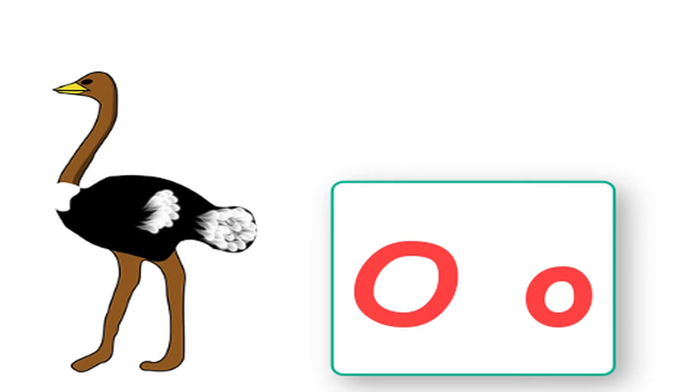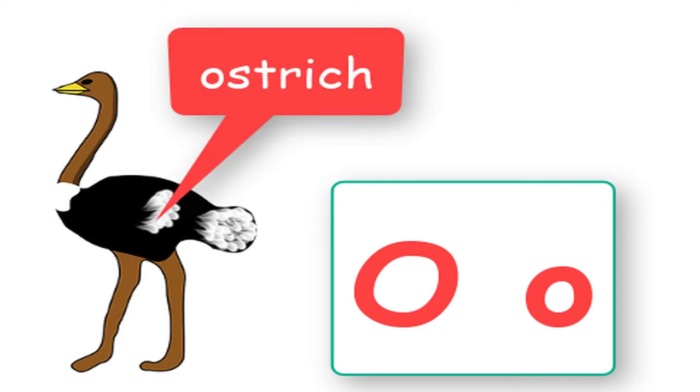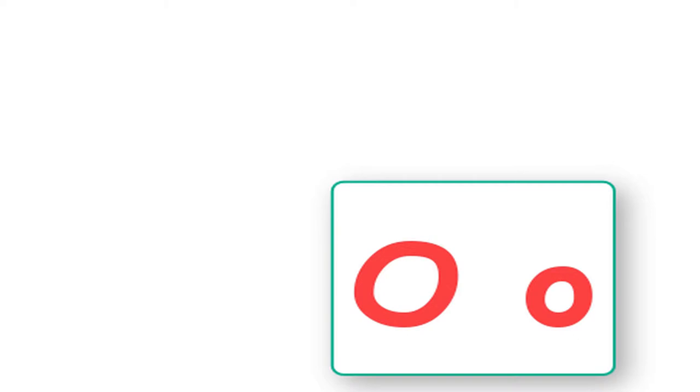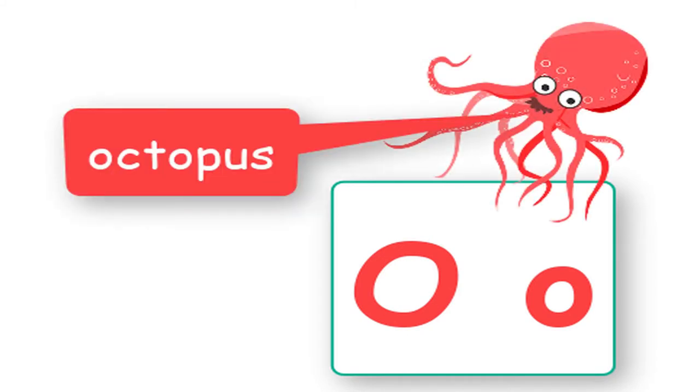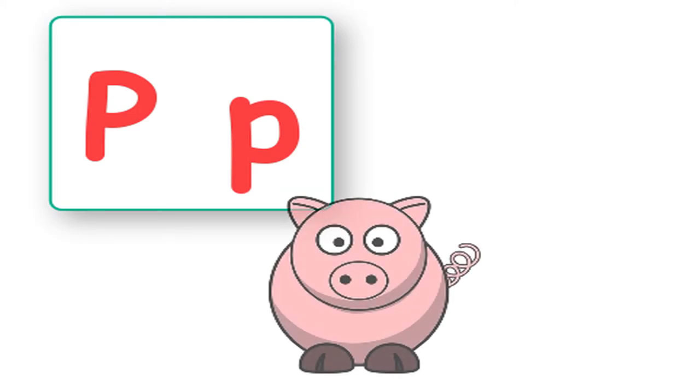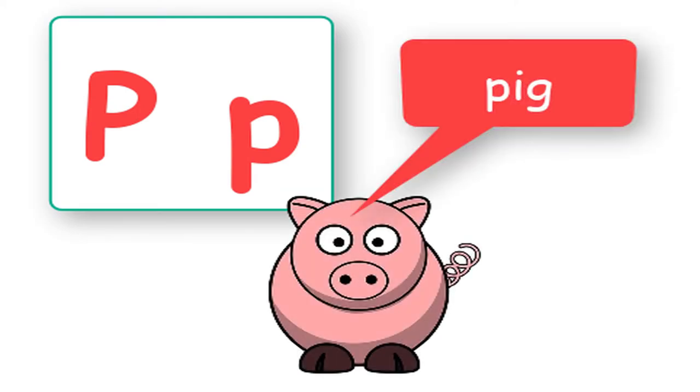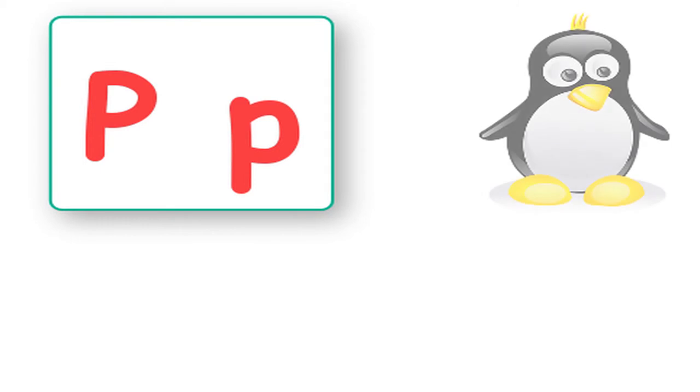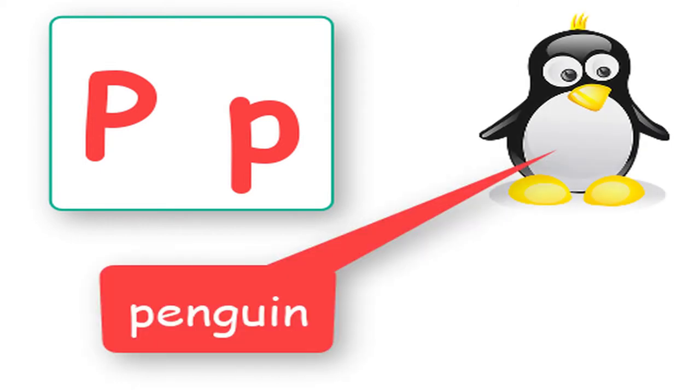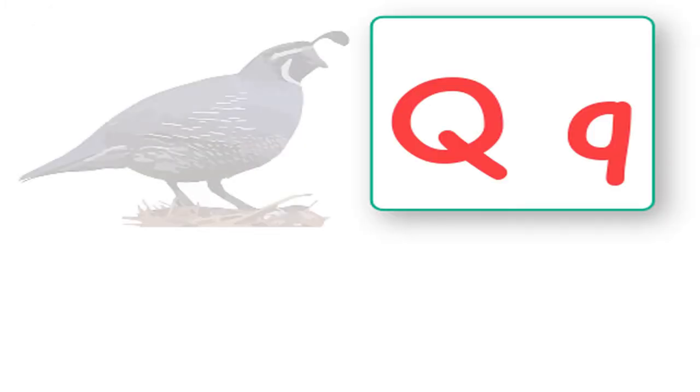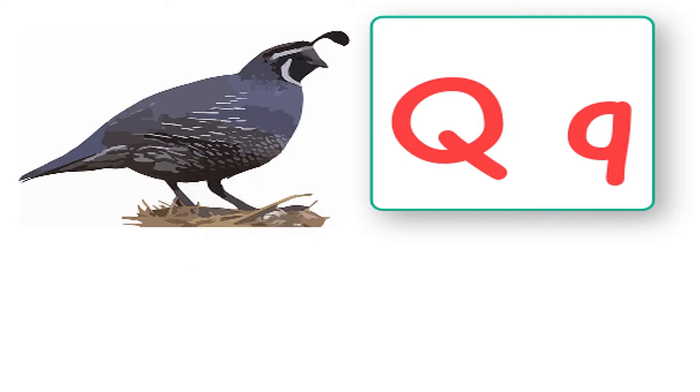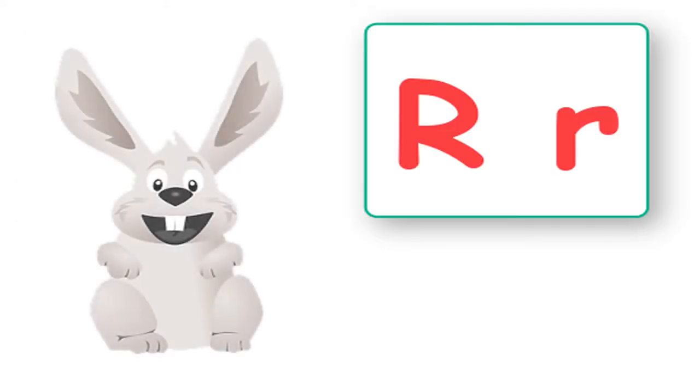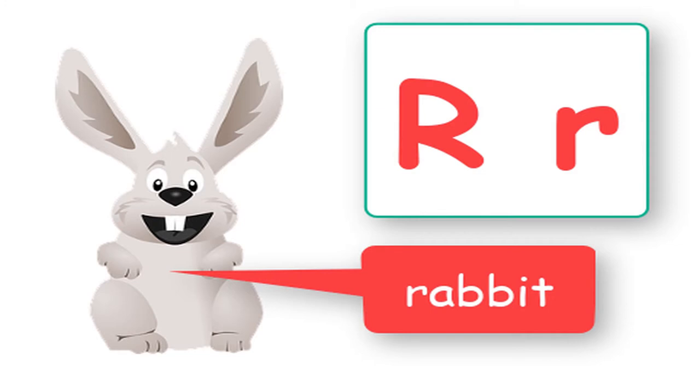O says ostrich, ostrich. O says octopus, octopus. P says pig, pig. P says penguin, penguin. Q says quail, quail. R says rabbit, rabbit.